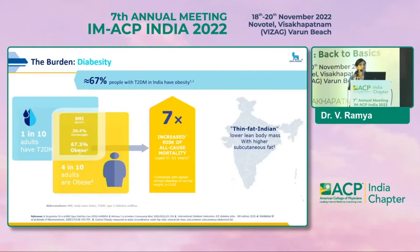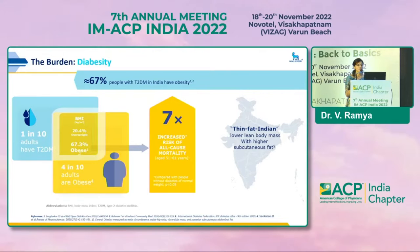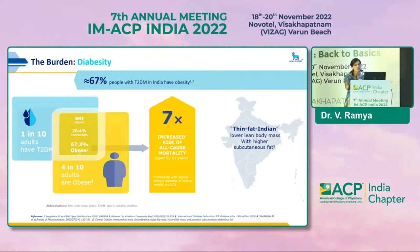Coming to the word 'diabesity,' which is a new term used in the past decade. Diabesity is the co-existence of both diabetes and obesity — a modern epidemic. Both are interrelated by multiple pathophysiological relations revolving around insulin resistance and hyperinsulinemia. 1 in 10 individuals have diabetes in India, 4 in 10 adults are obese, and 67% of people with diabetes in India have obesity. The mortality risk is increased by 7 times if a patient has diabetes along with obesity compared to non-obese, non-diabetic individuals.